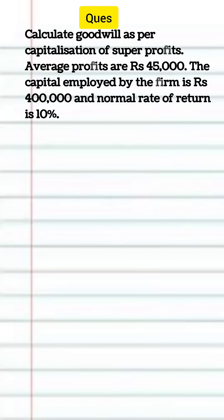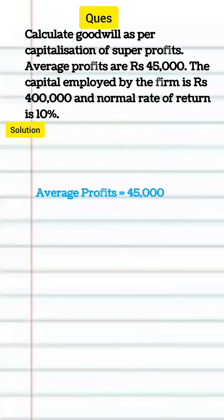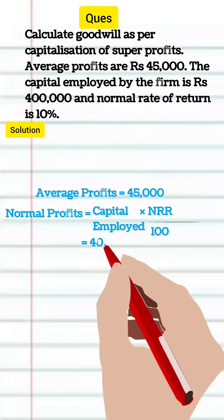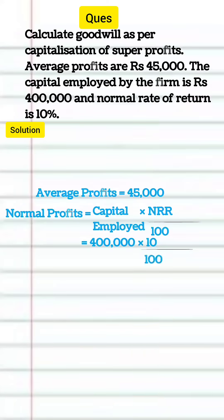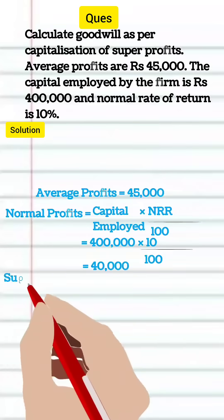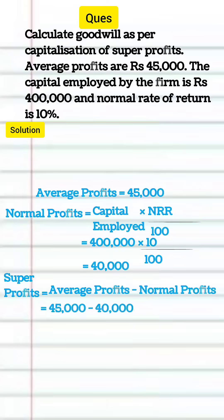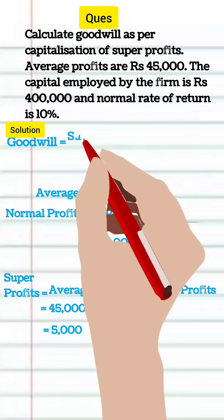In the given question, we have to calculate goodwill based on the capitalization of super profit method. Average profits are given. Normal profit can be calculated as 4 lakh multiplied by 10 divided by 100, which comes out to be 40,000. Super profit is equal to average profit minus normal profit, that is 45,000 minus 40,000, which equals 5,000.